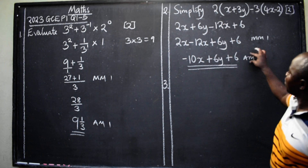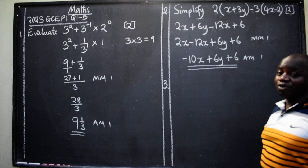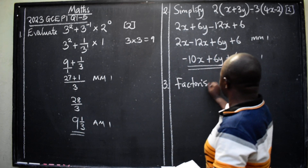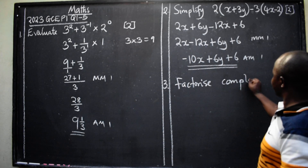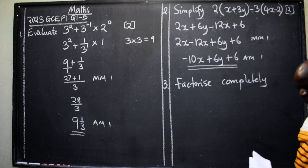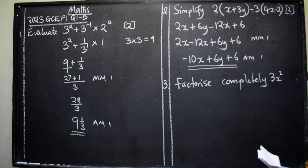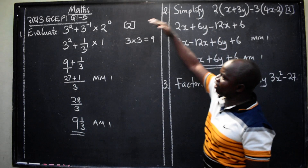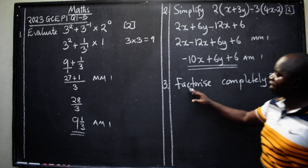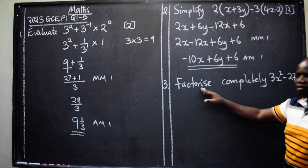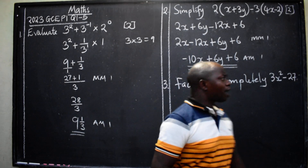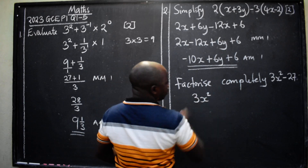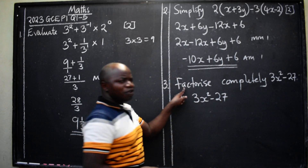Let's look at question three. Factorize completely: 3x² minus 27. Notice the different keywords — evaluate, simplify, and now factorize completely. 'Completely' means you must finish the factorization all the way. This is another question under algebra.